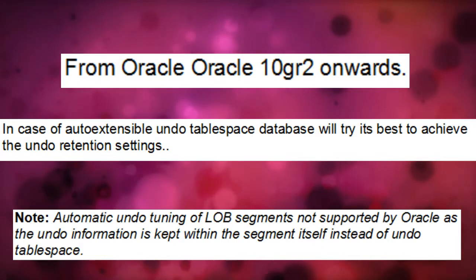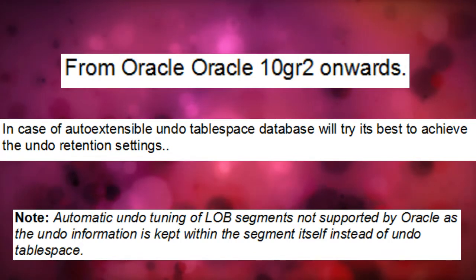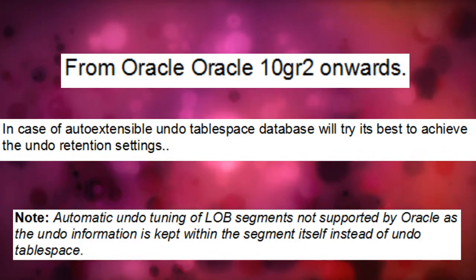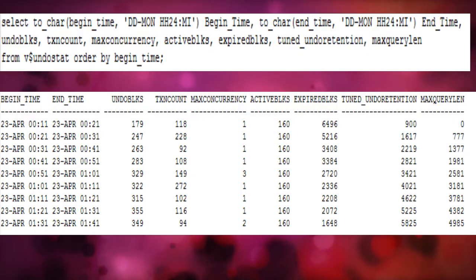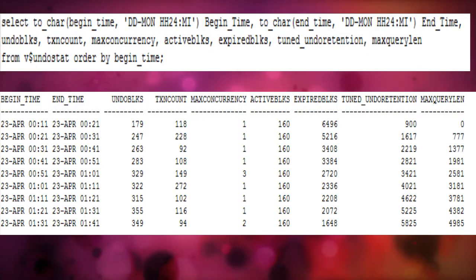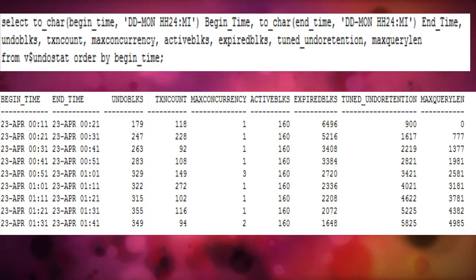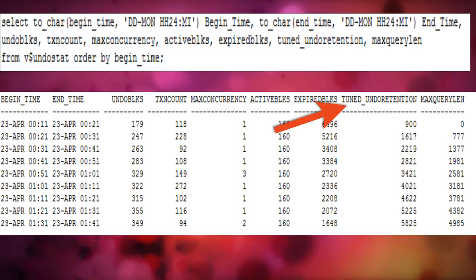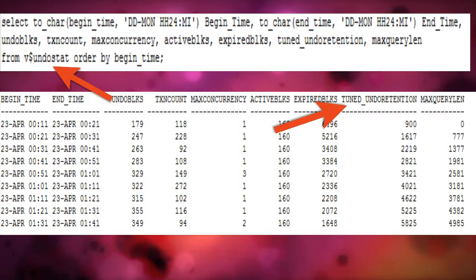In fact, the tuned undo retention can be greater than the undo retention specified in the database. We can check the value of automatically tuned undo retention by querying the tuned_undo_retention column of v$UNDOSTAT. So, the following three guidelines can be adopted to minimize the chances of your database getting an ORA-1555 error.